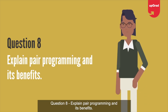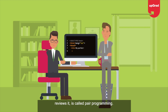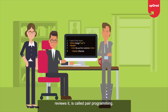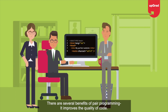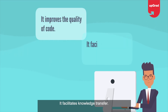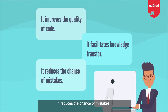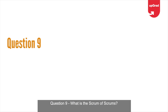Question 8: Explain Pair Programming and its benefits. The combined effort in the team where one programmer writes the code and the other one reviews it is called Pair Programming. There are several benefits: it improves the quality of code, it facilitates knowledge transfer, and it reduces the chance of mistakes.